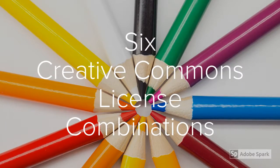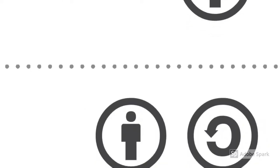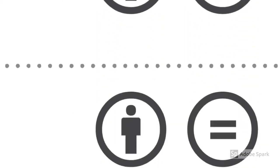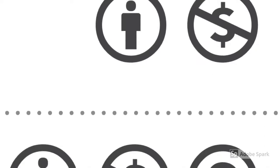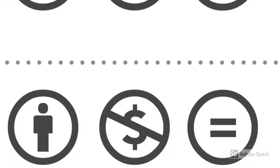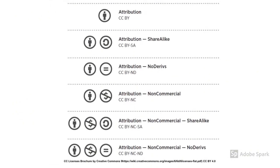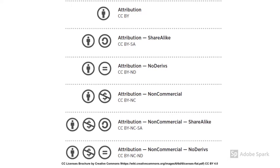These four elements are put together in six combinations to make up the CC licenses. These include: attribution; attribution share alike; attribution no derivatives; attribution non-commercial; attribution non-commercial share alike; and attribution non-commercial no derivatives. Together, these licenses tell others how you want your work to be used.